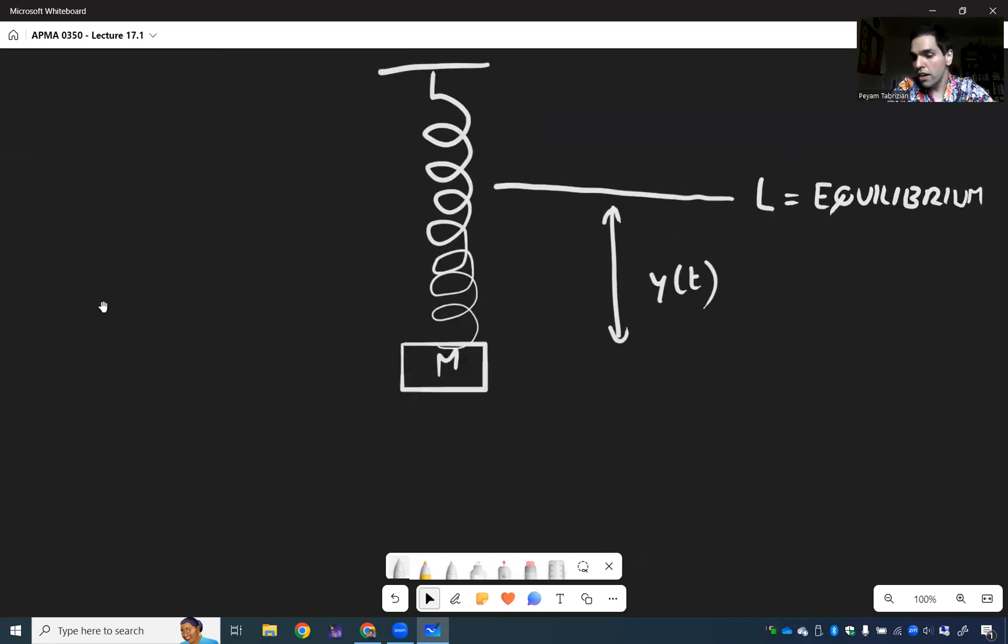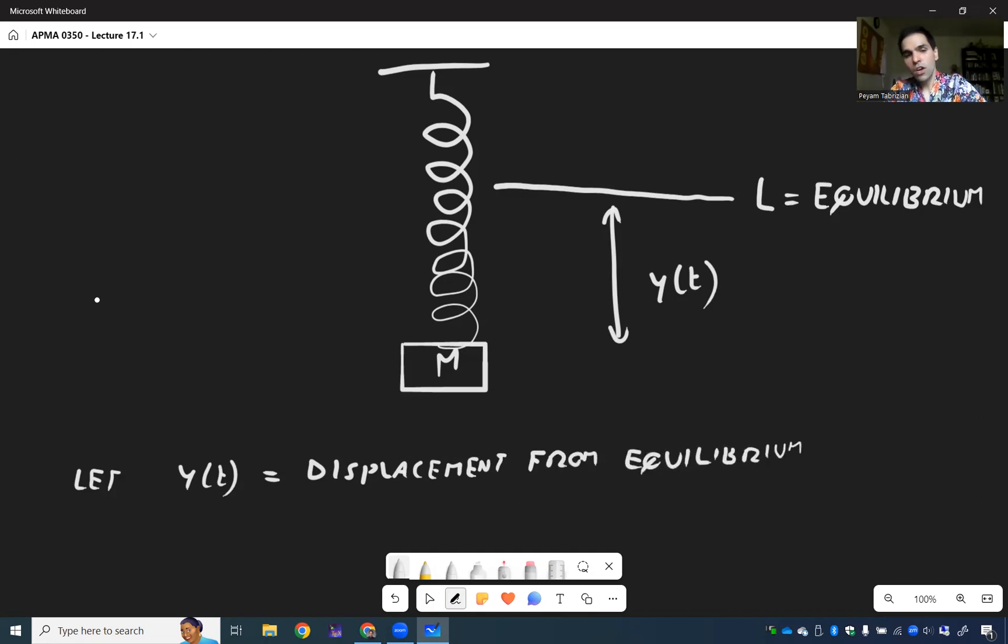So let Y of T be the displacement from equilibrium, which in terms of position we can write as Y equals S minus L.